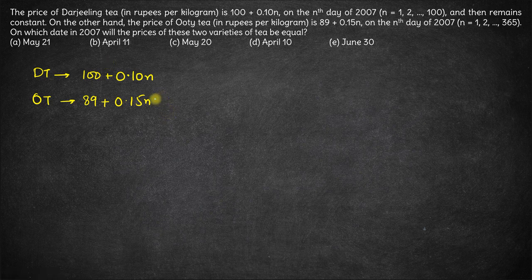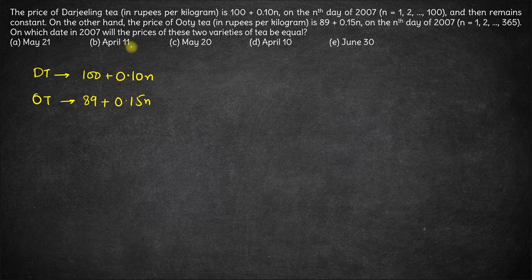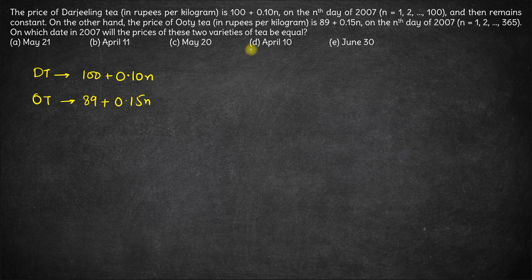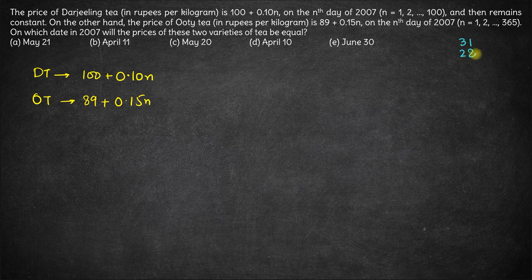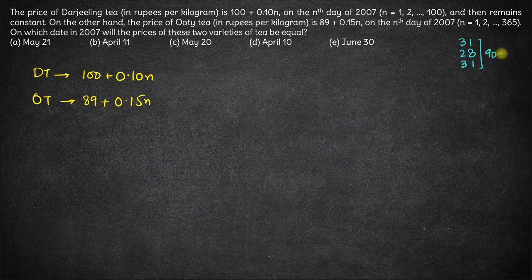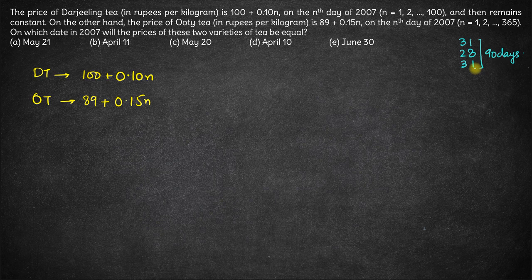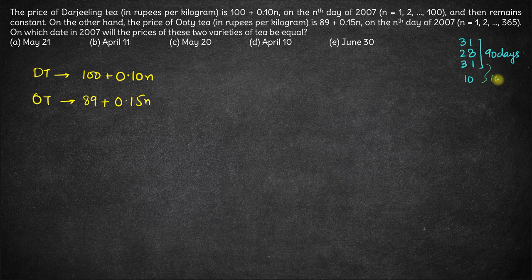If you look at the options, the earliest date we have is April 10. Let's see, April 10 is how many days in 2007? January 31 days, February 28 days, March 31 days. So January, February, March together is 90 days. And then you have 10 more days of April, so effectively you have total 100 days.